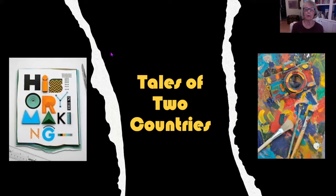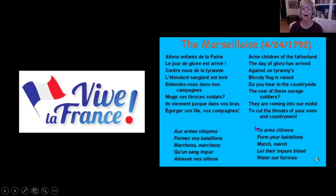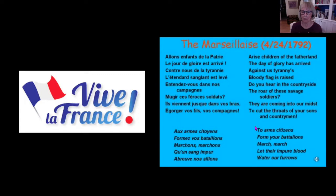Today we're going to look at tales of two countries - real places. The first of those countries is France. My goal here today is not to tell the whole history of the country, and it's certainly not to give all the art history. What I have in mind is that we look at the kind of picture we get of that country through their art, and the kind of picture that citizens get of their own country through their art. In talking about France, we might begin with the Marseillaise.